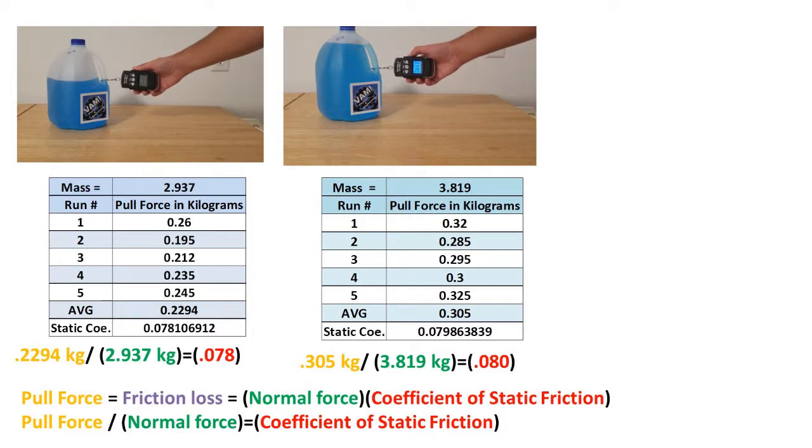This is about a 2% difference from the measurement with a jug with mass of 2.937 kilograms. This is probably due to experimental error, so the theory holds up to the experiment.